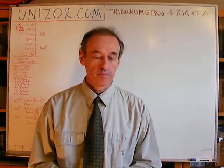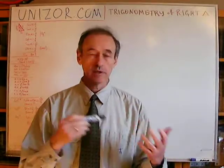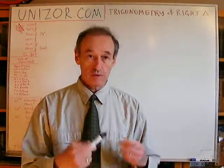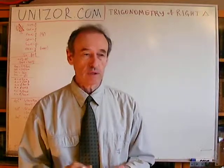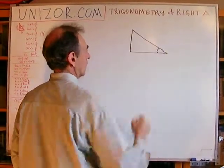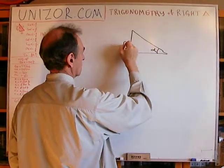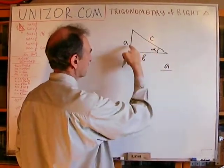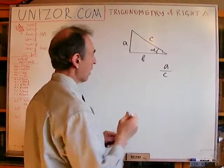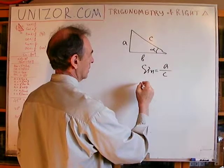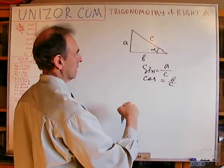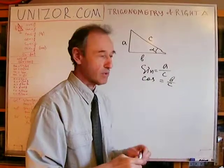In the previous lectures, I did two things. First, I explained the roots of trigonometry — the roots are in the triangles, primarily in the right triangles — and basically defined functions of angles, of acute angles, as the ratio between the opposite cathetus of the right triangle with this acute angle to the hypotenuse. That's the sine. And the cosine is the ratio of the adjacent cathetus to the hypotenuse. Then all other functions were also defined this way.